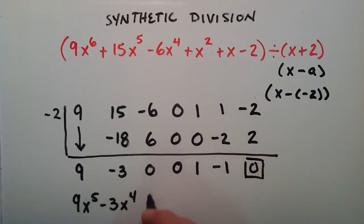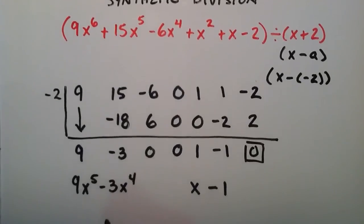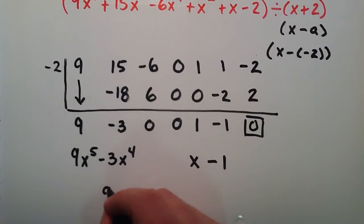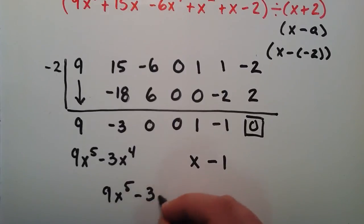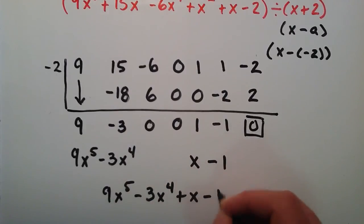And then we have 0x to the 3rd, 0x to the 2nd. So this would be 1x to the 1st or just 1 times x which is x. And then minus 1. So this is our answer here. I'll go ahead and write that in a little bit better form here. So our answer is 9x to the 5th minus 3x to the 4th plus x minus 1.